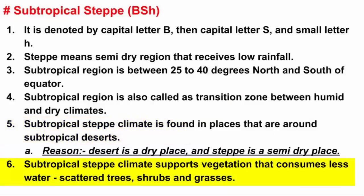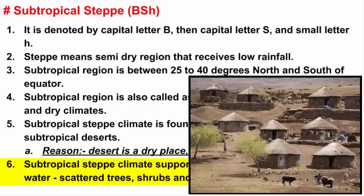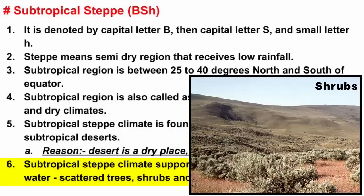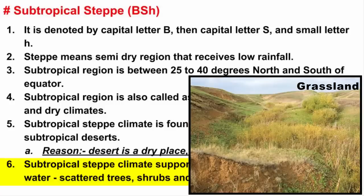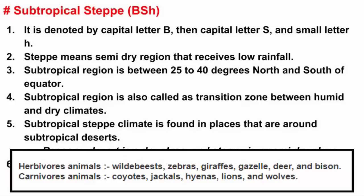The climate of subtropical steppe is too dry to support forests or any kind of dense vegetation. But you will still find a few scattered trees which require less water. Mainly grasses and shrubs are found in regions having subtropical steppe climate. Where there is grassland, you will naturally find grazing animals which are herbivorous, and these herbivorous animals in turn attract carnivorous animals that feed on them. These are some of the flora and fauna that exist in subtropical steppe climate.